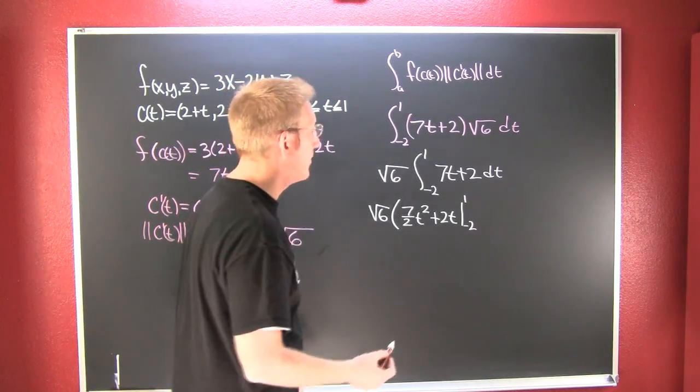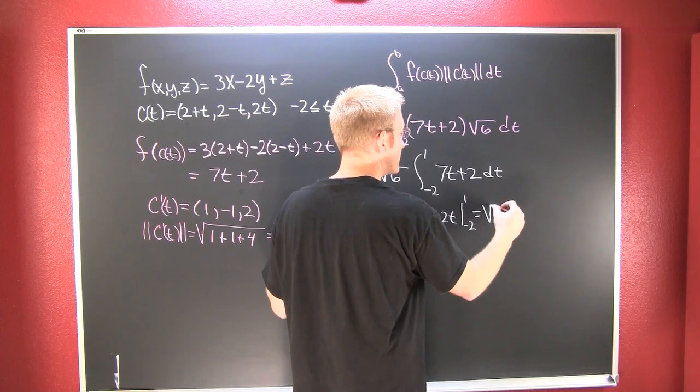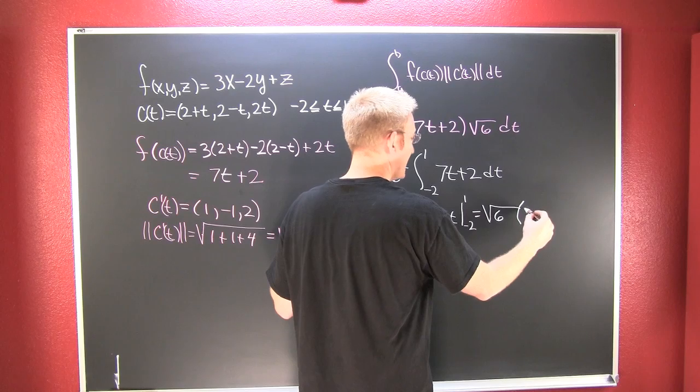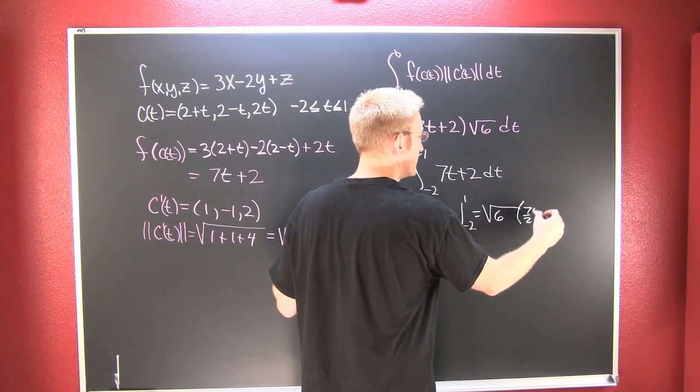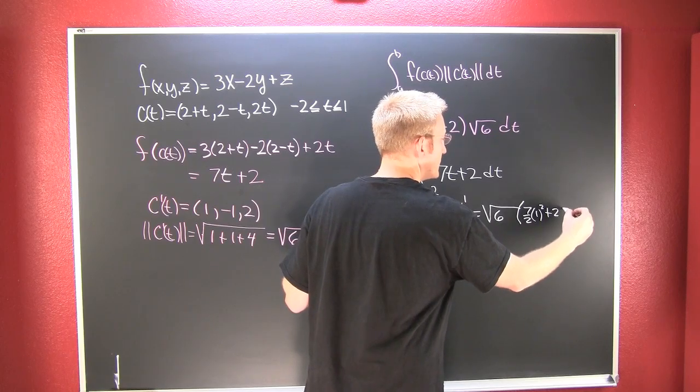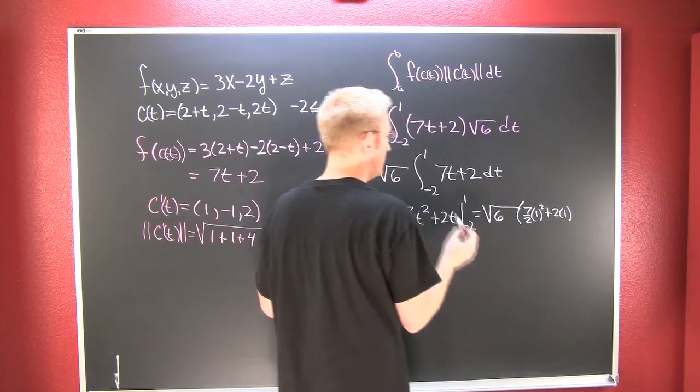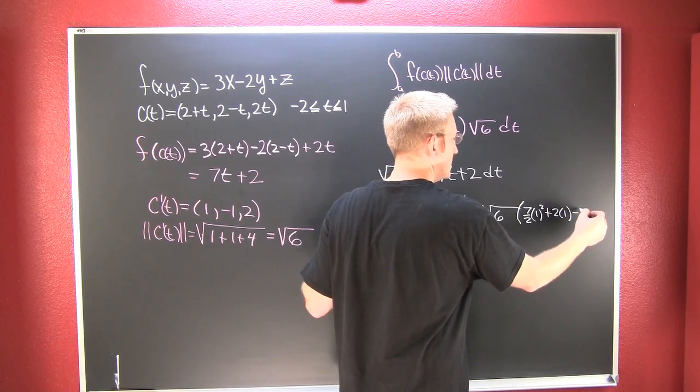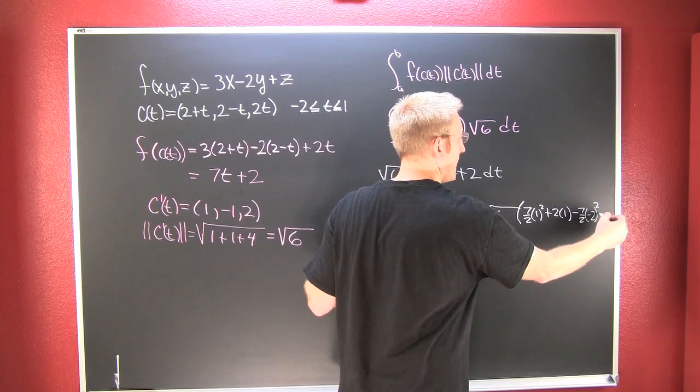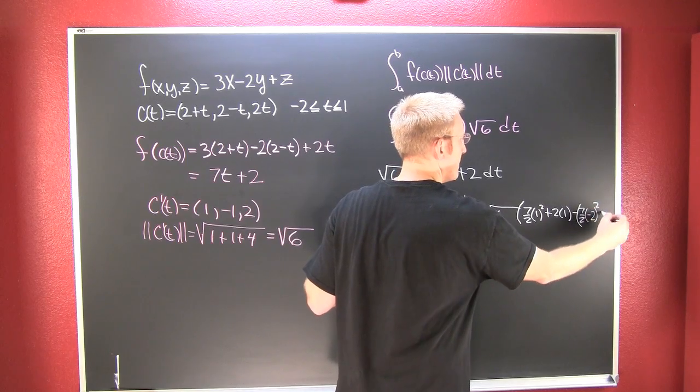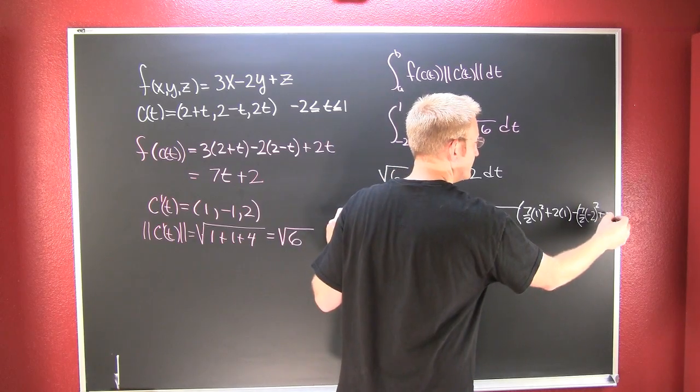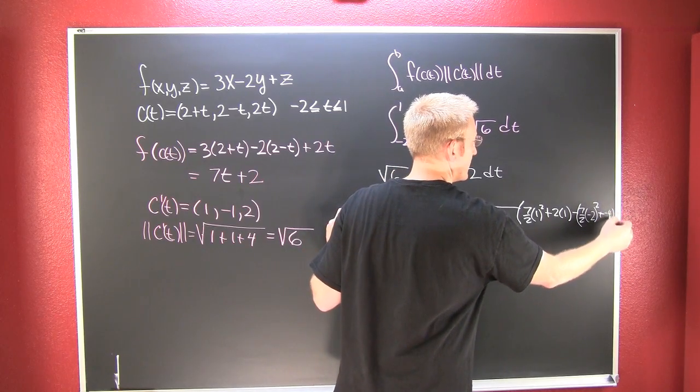Let me go ahead and plug those in. So this is going to be the square root of 6 times 7 halves 1 squared plus 2 times 1, minus 7 halves 2 times the minus 2 squared plus a minus 4.